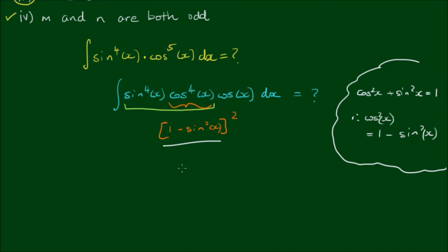Let's expand this term. So if we square everything in the brackets, we get 1 minus 2 by sine squared of x plus sine to the 4th power of x. And now we can copy everything else down.